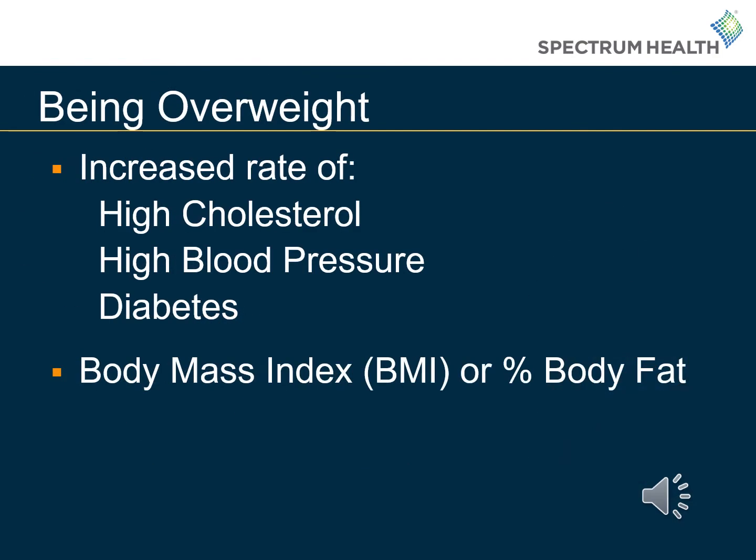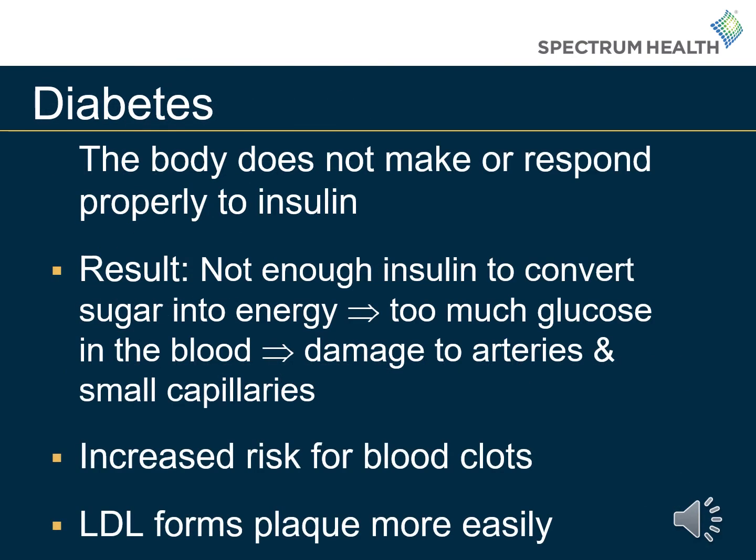Being overweight is a risk factor for developing heart disease as it increases the rate of high cholesterol, high blood pressure, and diabetes. BMI or percent body fat can be used to determine if an individual is overweight. When an individual has diabetes, their body either does not make or does not respond properly to insulin. Without the proper insulin response, an excess of glucose ends up in our bloodstream, which can cause damage to the arteries and small capillaries. The excess sugar in our bloodstream can also increase the risk for blood clots and help LDL, or bad cholesterol, to form plaque more easily.